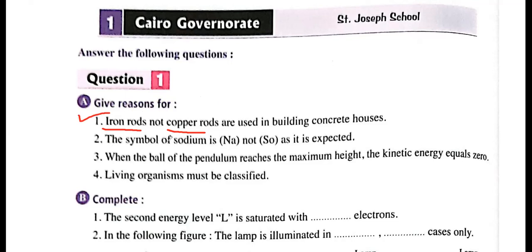The symbol of sodium is Na, not So, as expected. Since the symbol is derived from the Latin name, not the English one, it will be Na, not So. The answer: the symbol of sodium is Na, not So, because the symbol is derived from the Latin name.